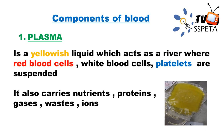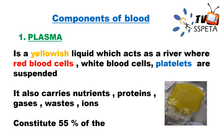Plasma also carries waste like urea, ions like sodium and potassium, as well as nutrients and proteins. It constitutes 55% of the blood, so most of the blood is plasma.